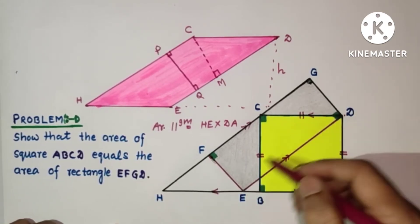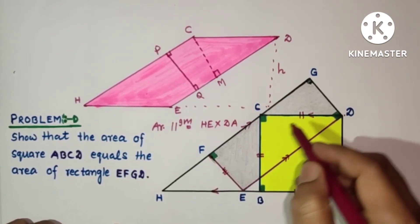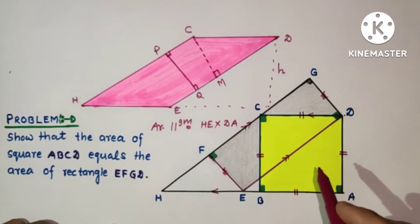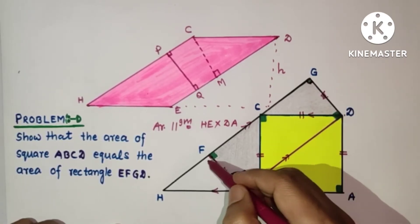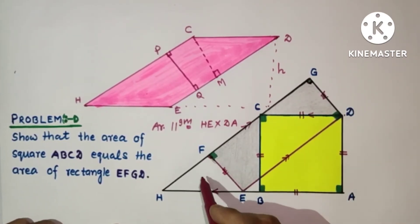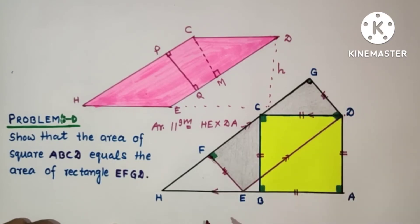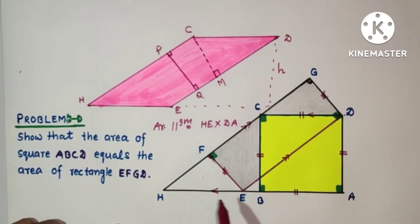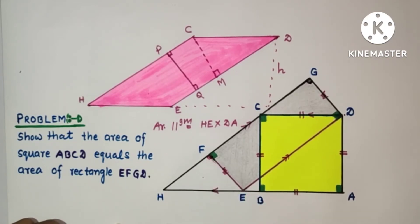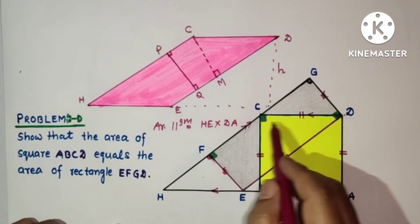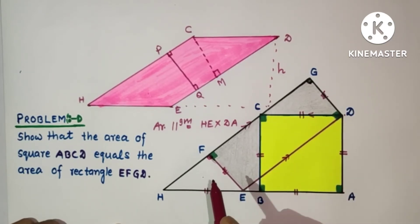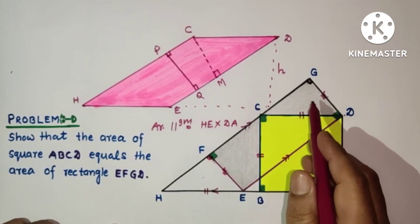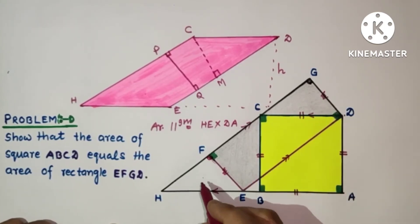This angle is 90 degrees, this angle is 90 degrees, and since FEDG is a rectangle, opposite sides are equal — so this side equals that side. Because we have a right angle, equal hypotenuses, and equal sides, these two triangles are congruent by the Right Angle-Hypotenuse-Side (RHS) test. HE and CD are equal as opposite sides of the parallelogram, confirming congruence.